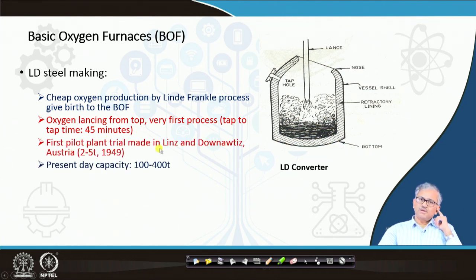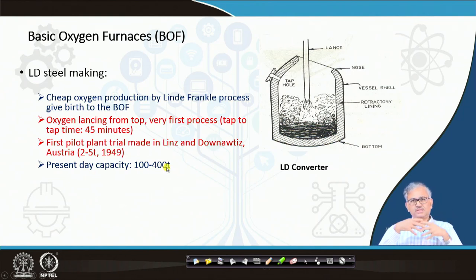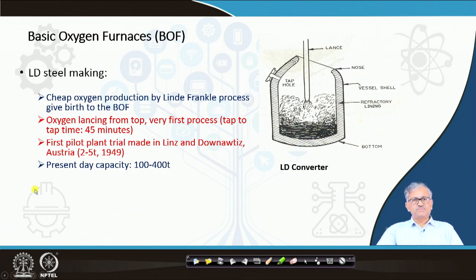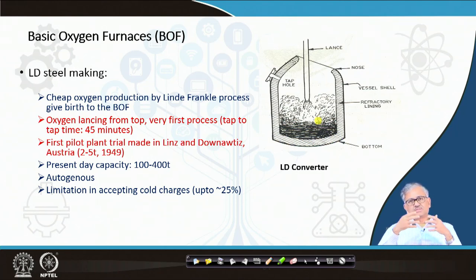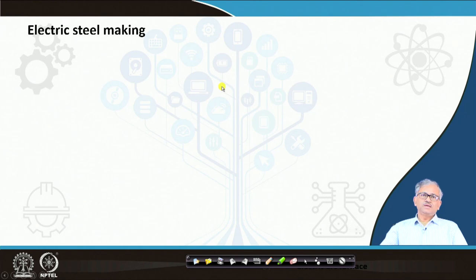The first pilot plant was set up at Linz and Donawitz, 2 to 5 tons, in 1949. After that, once the LD furnace came into picture, the open hearth slowly phased out due to its very large time requirement. The present capacity of LD furnaces is 100 to 400 tons. It is also an autogenous process, but since the partial pressure of oxygen is very high, heat generation is quite high and you can also accept some cold charge.